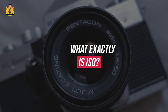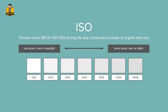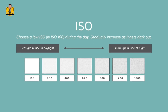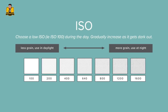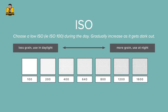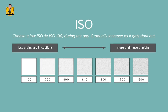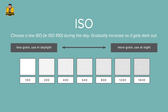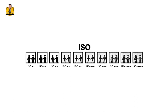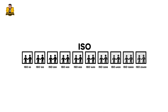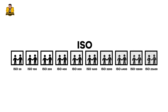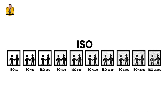What exactly is ISO? ISO measures the sensitivity of your camera's sensor to light. A lower ISO, such as 100, is less sensitive to light, whereas a higher ISO, like 1600, is more sensitive. Changing the ISO allows you to take photos in different lighting conditions without compromising image quality.